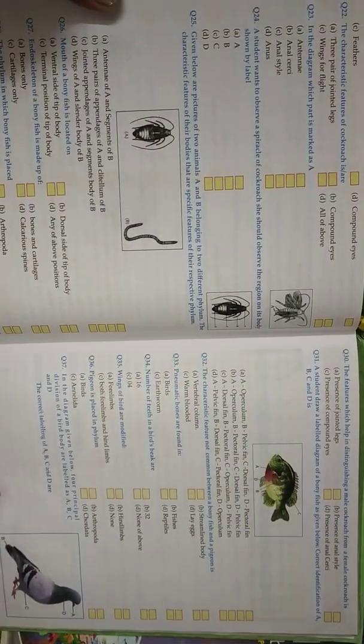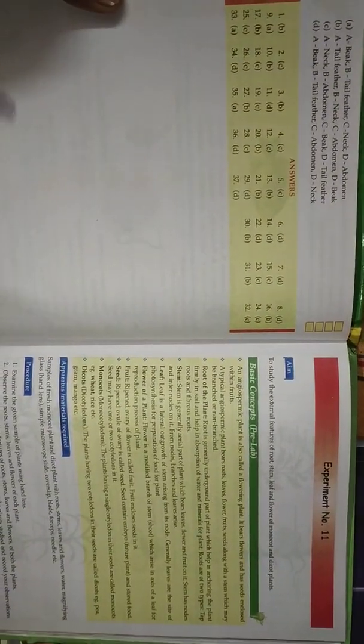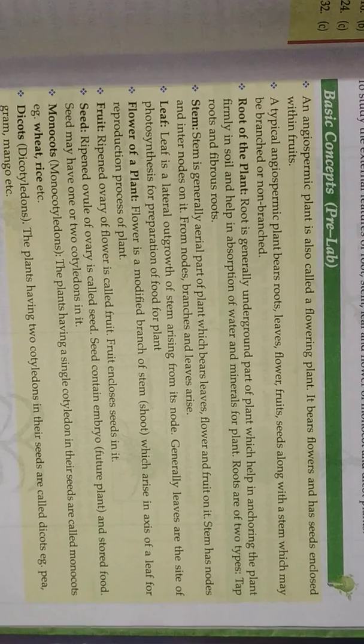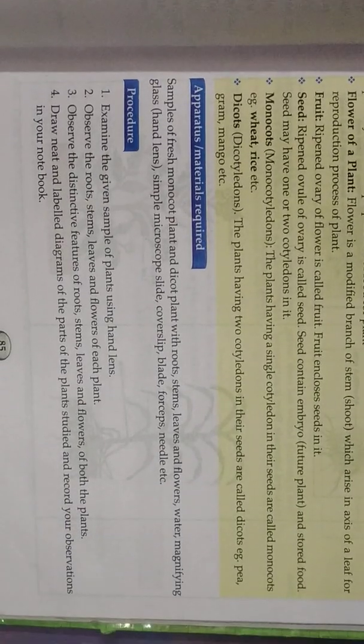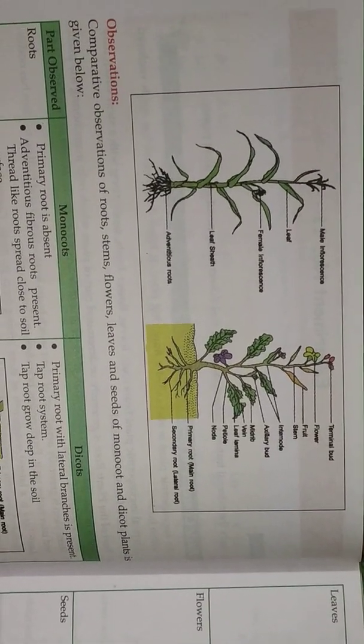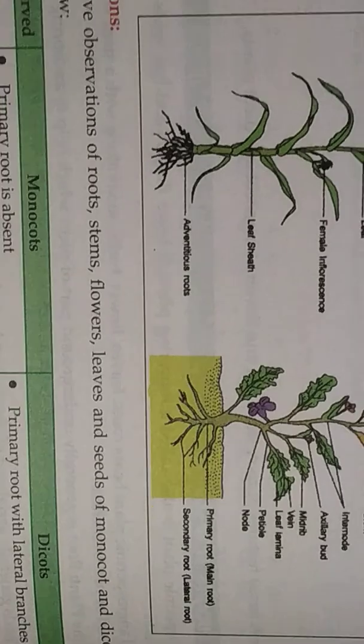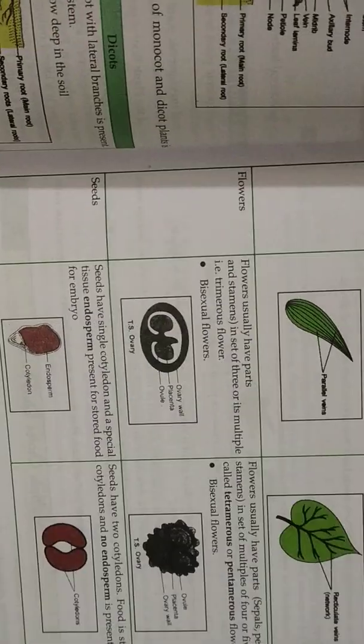Next page, also multiple choice questions. And then experiment number 11: to study the external feature of roots. Material required, procedure. In the next page, here is the diagram, and then it is also diagram in the next page.